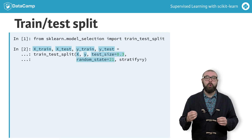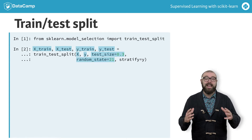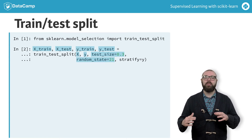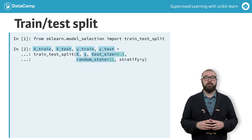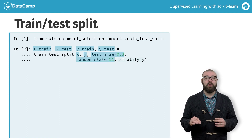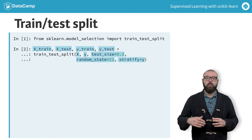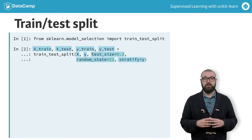It is also best practice to perform your split so that it reflects the labels on your data. That is, you want the labels to be distributed in train and test sets as they are in the original dataset. To achieve this, we use the keyword argument stratify equals y, where y is the list or array containing the labels.